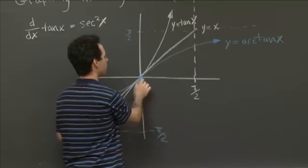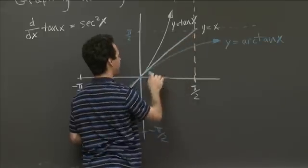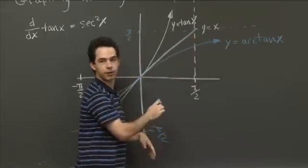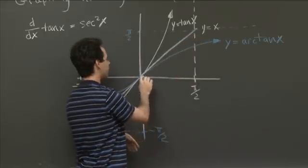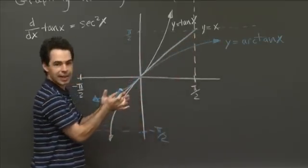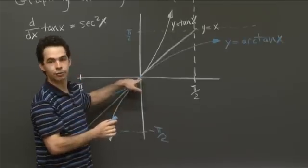For x bigger than 0, y equals tan x is always bigger than x, which is always bigger than y equals arctan x. And then they come in, and right at the origin, they're tangent to each other. They both have derivative 1 here.